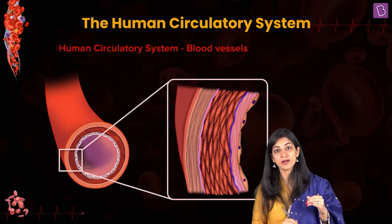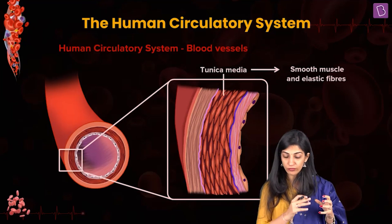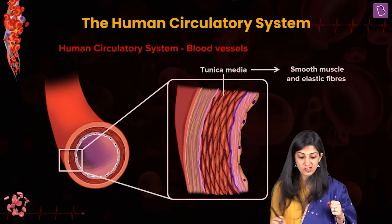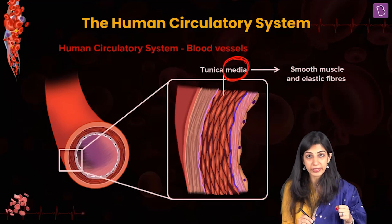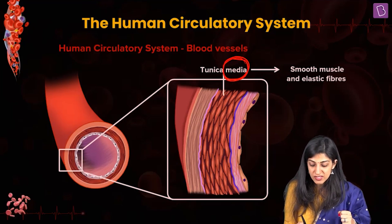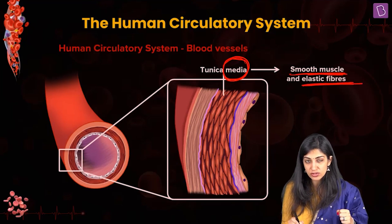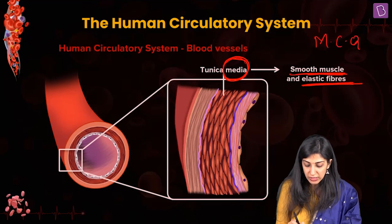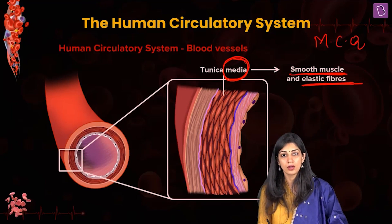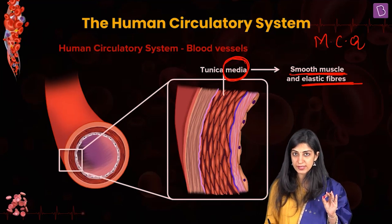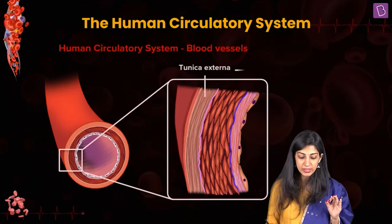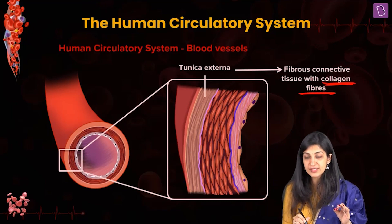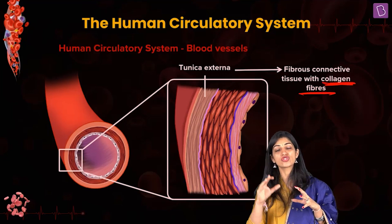Since blood vessels have flow of fluid through them, they need elasticity and movement. So the tunica media, the middle layer, is made up of smooth muscle and elastic connective tissue — smooth muscle fibres and elastic fibres. This is a very important MCQ for NEET. Moving to tunica externa, the outermost one is formed by fibrous connective tissue made of collagen fibres.